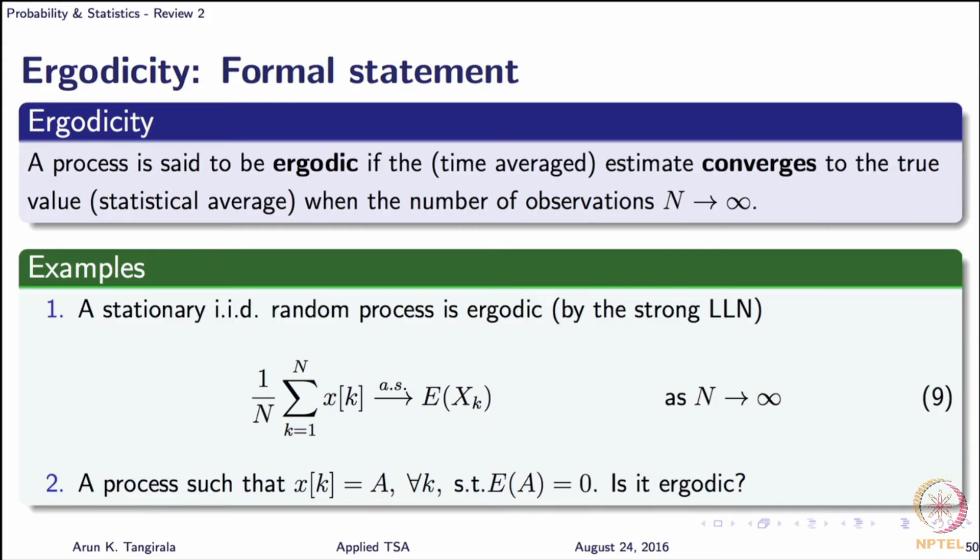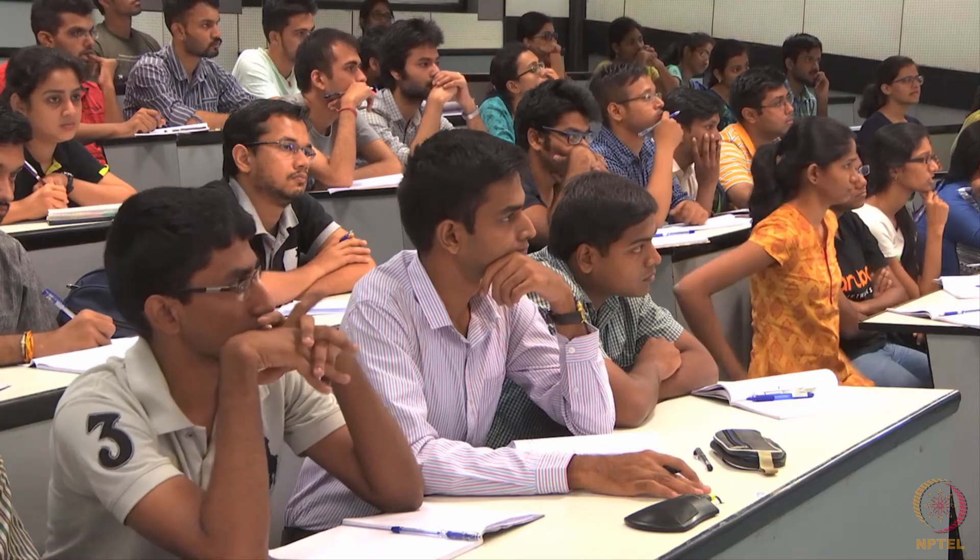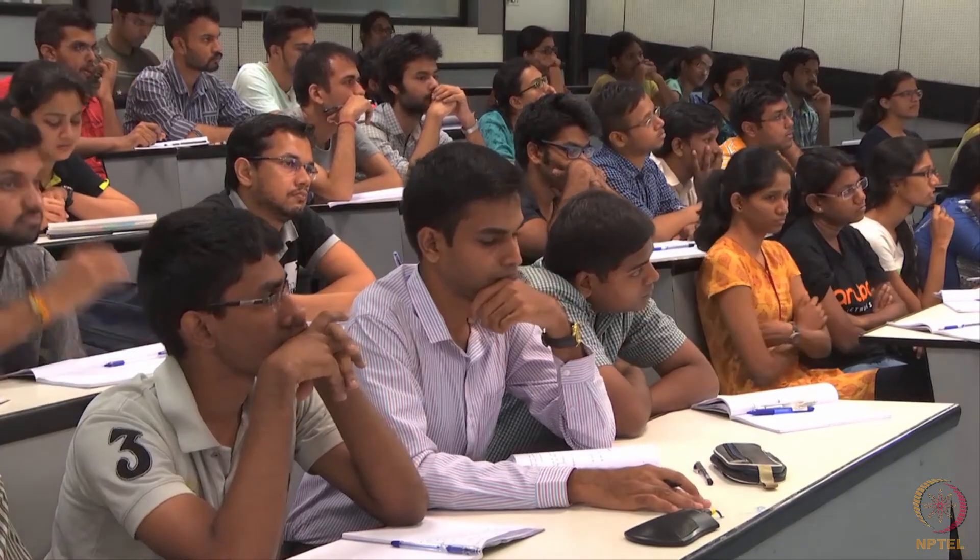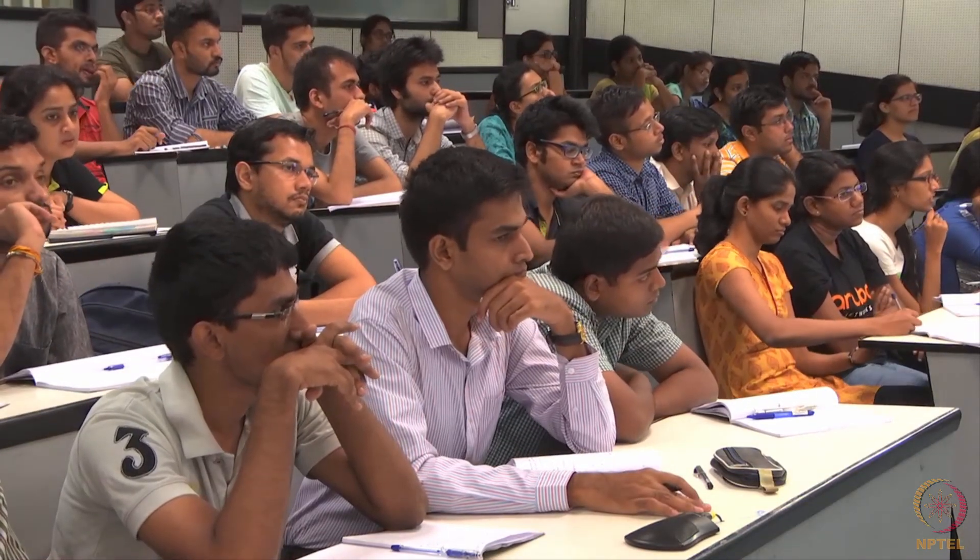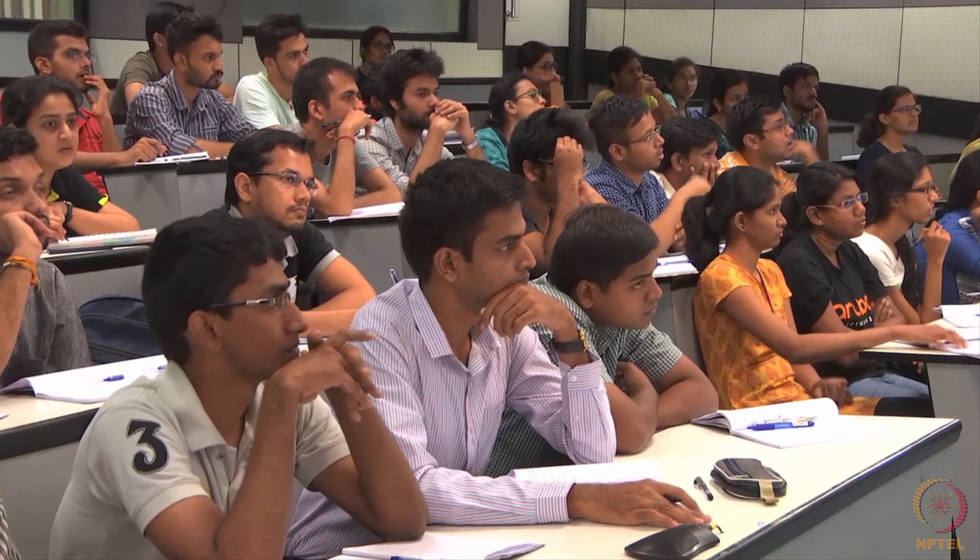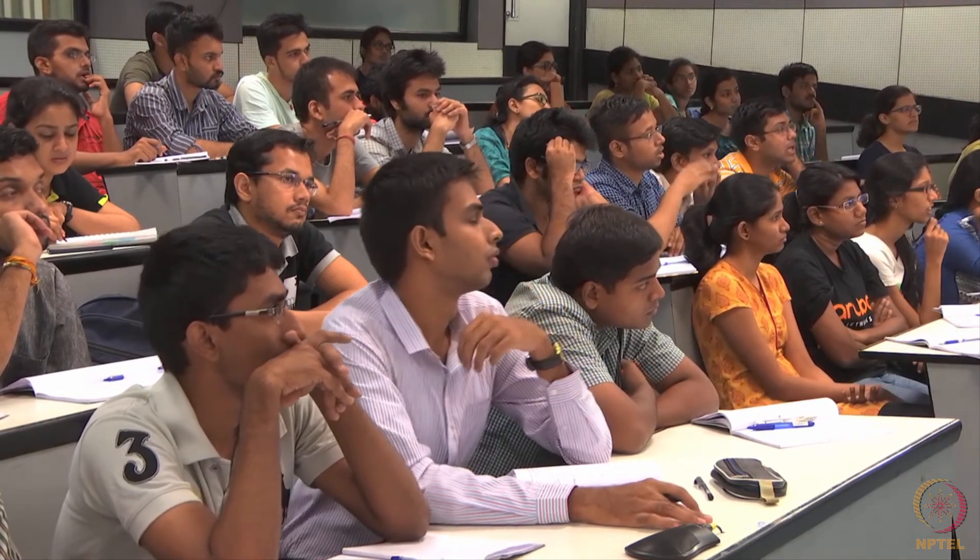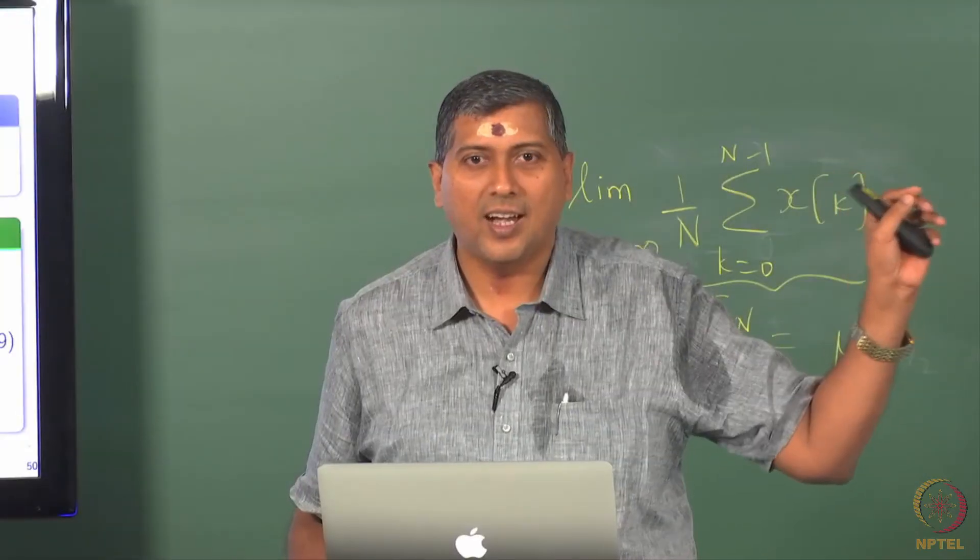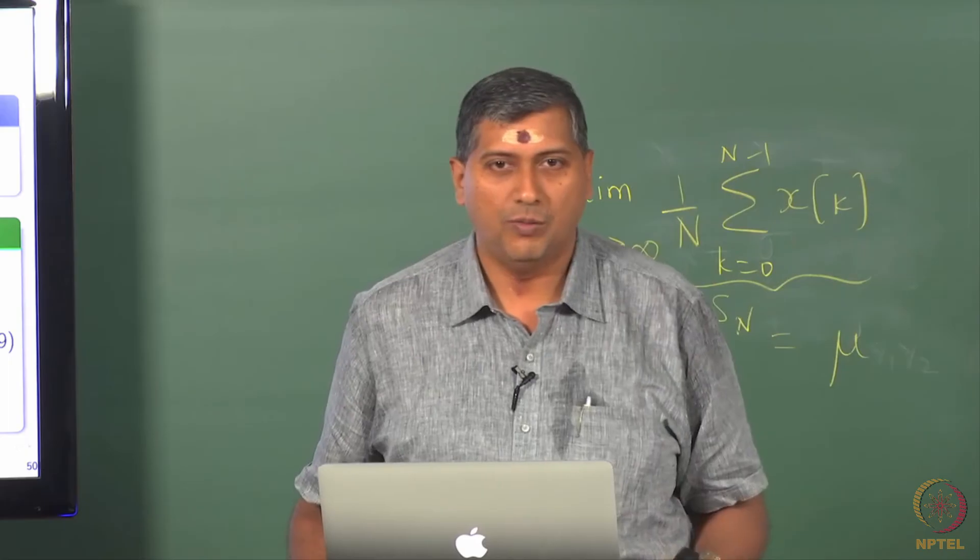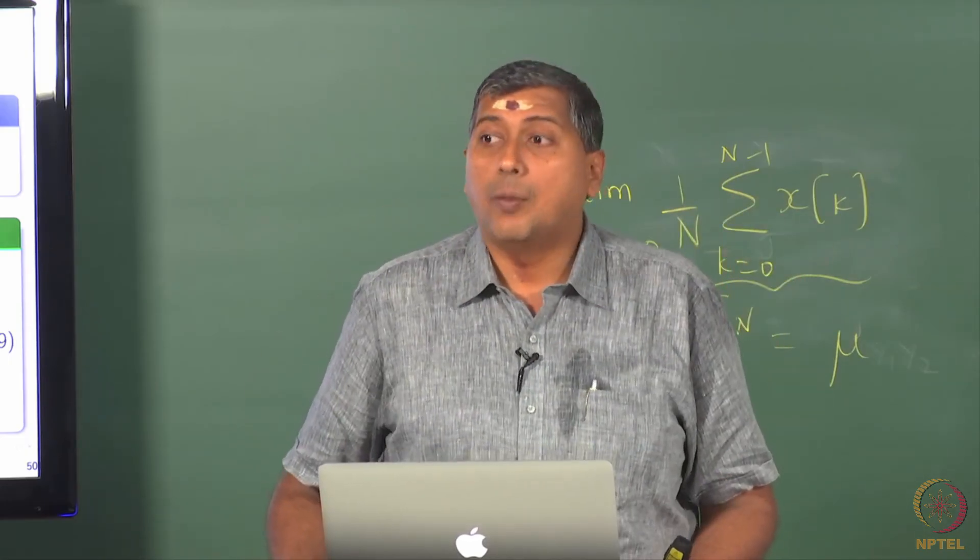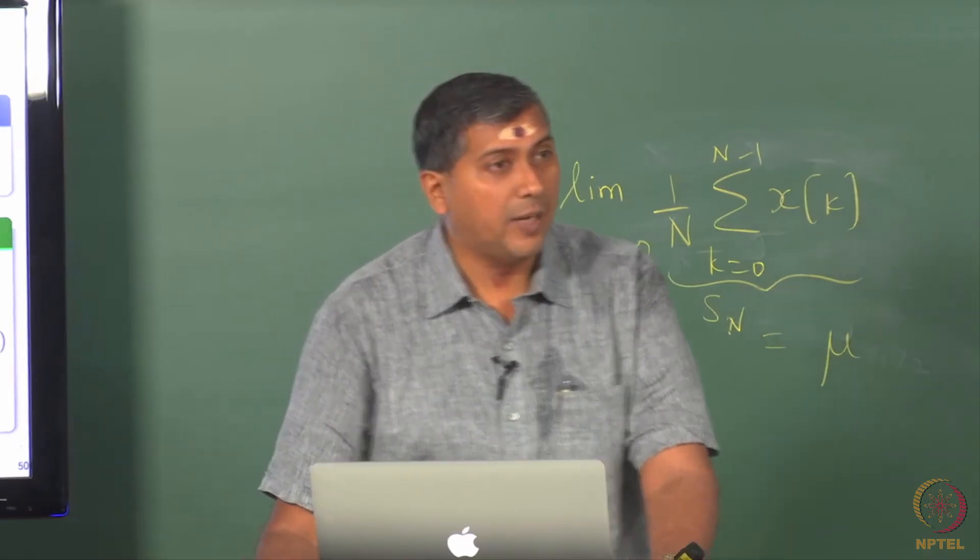What is random about this signal in case 2? I have said that a is a random variable such that expectation of a is 0. It is a 0 mean random variable. That is all that needs to be known, we do not worry about the distribution. How can you justify that x is random when x is constant actually? What is random about it? The starting point, whatever it began, there is a randomness about it and then it has stuck to that random. So that is what imparts randomness to the signal.